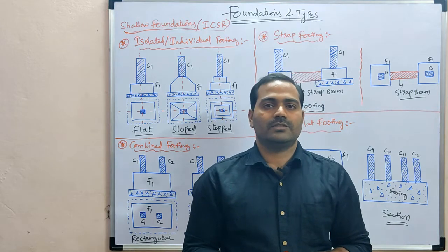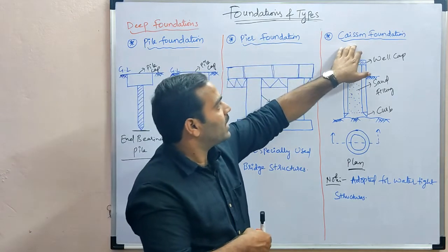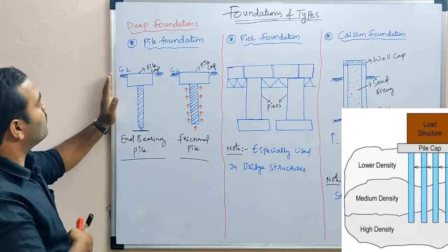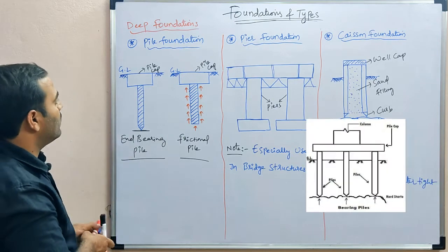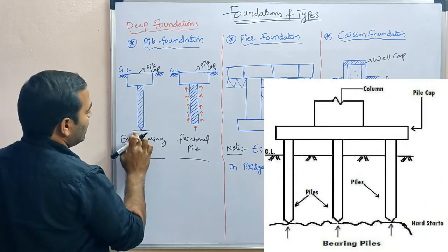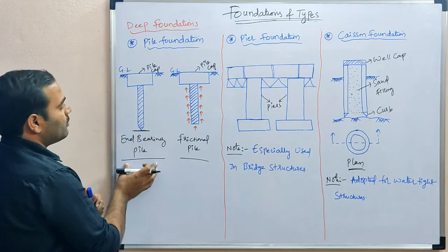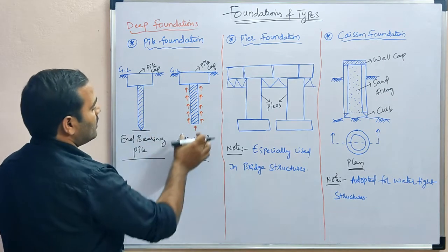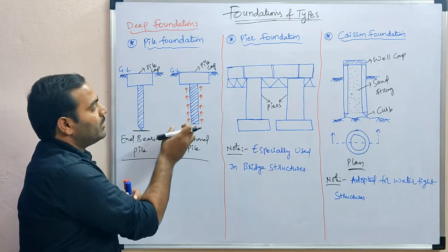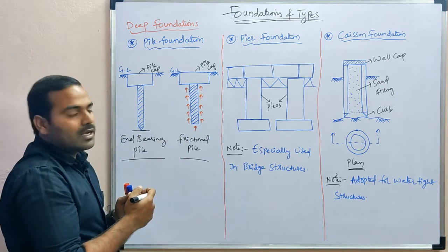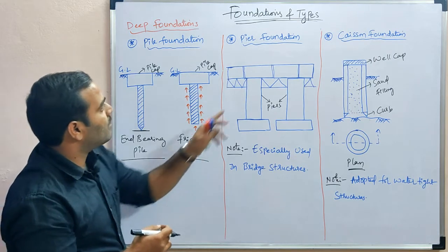These are the different types of deep foundations: pile foundation, pier foundation, and caisson or well foundation. Pile foundation is divided into two types: end bearing pile and frictional pile. In end bearing pile, the complete load transferred through the pile is borne by the bottom hard strata. In frictional pile, friction developed around the pile causes the surrounding soil to act with an upward force, transferring the load to the surrounding soil.